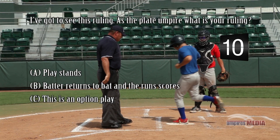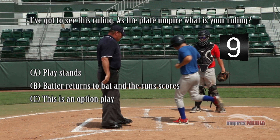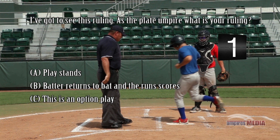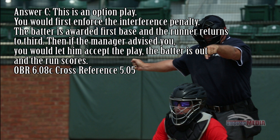Answer: C — this is an option play. You would first enforce the interference penalty: the batter is awarded first base and the runner returns to third. Then, if the manager advises you, you would let him accept the play — the batter is out and the run scores.